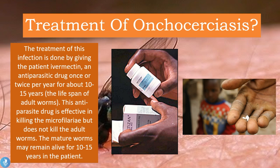The treatment of Onchocerciasis is done by giving the patient Ivermectin, an antiparasitic drug, once or twice per year for about 10 to 15 years, which is the actual lifespan of the adult worms. This drug is effective in killing the microfilaria but does not kill all the adult worms, and the mature worms may remain alive for 10 to 15 years in the patient — that is why treatment is carried out over this duration.